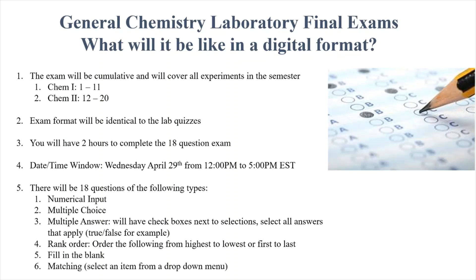Matching is not matching in the traditional sense of drawing lines from one thing to another — it's just going to be dropdown menus. For example, it might say 'in this setup, what would be the reactant and what would be the product?' and we'd give you a reaction. From the dropdown menu you'd pick a reactant, and from another dropdown you'd pick a product. These are all very simple — the dropdown menus will have pre-existing answers. If you want to look these up, you can Google Blackboard multiple answer, rank order, fill in the blank, and matching — Blackboard has really nice student explanations so you can familiarize yourself before exam day.